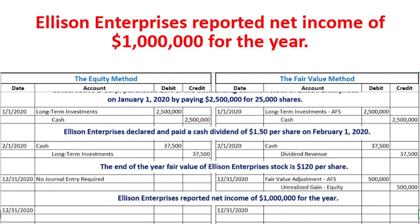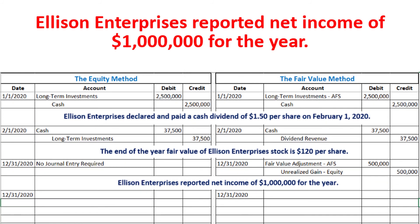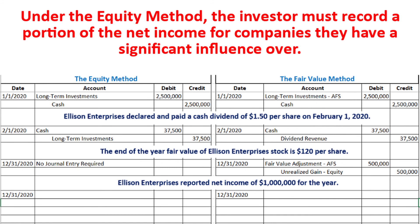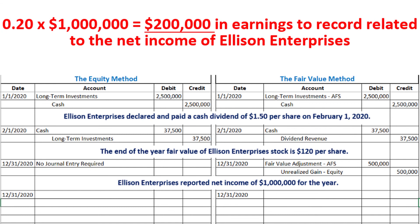Next, Ellison Enterprises reported net income of one million dollars for the year. Under the equity method, since the investor owns a large portion of the stock, we recognize a proportional share of that net income. We take the 20 percent ownership multiplied by one million dollars in net income to get two hundred thousand dollars. We credit the account called earnings from long-term investment for two hundred thousand dollars.